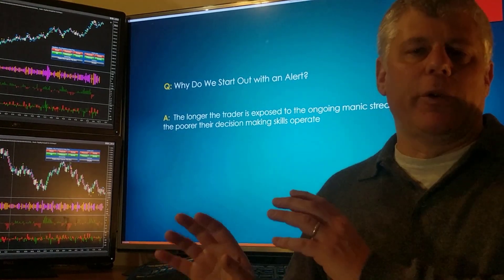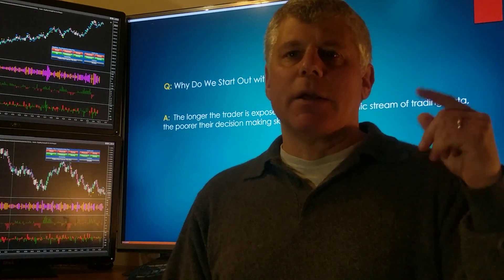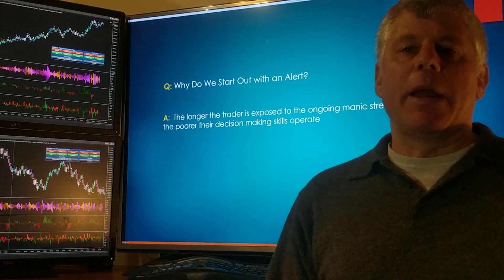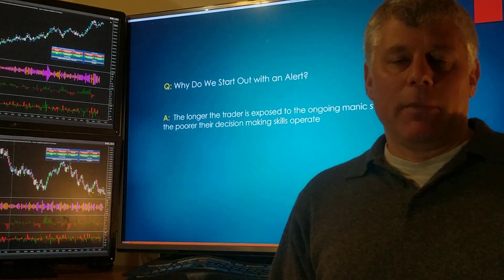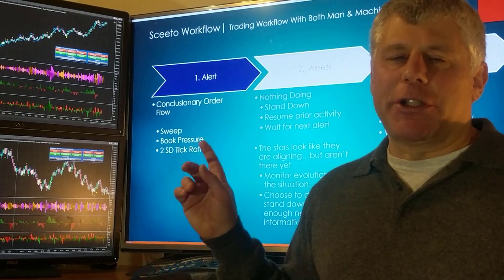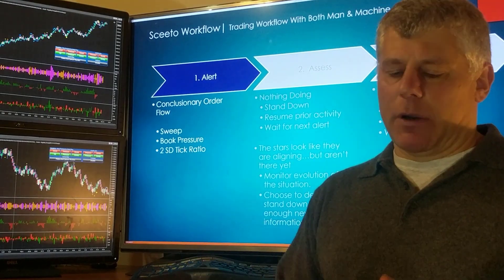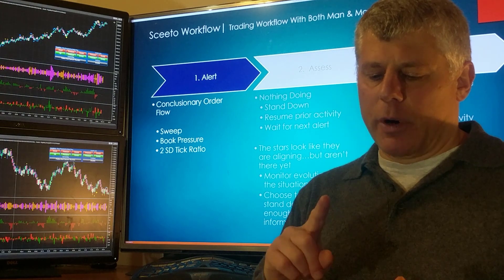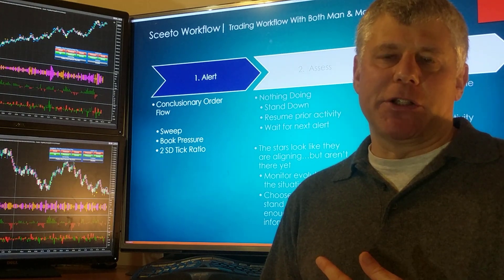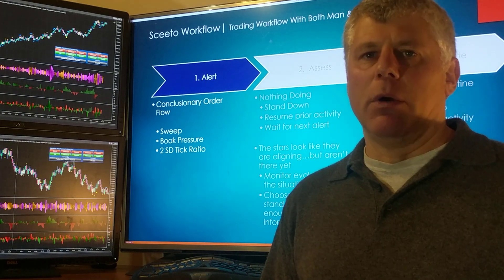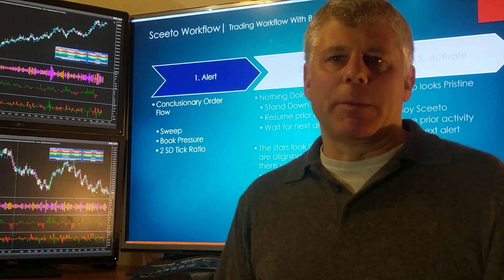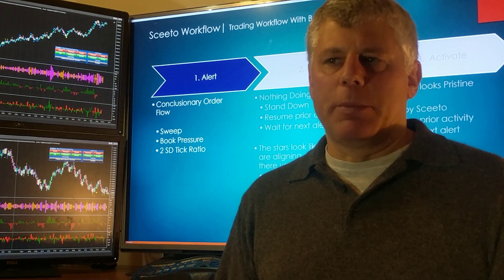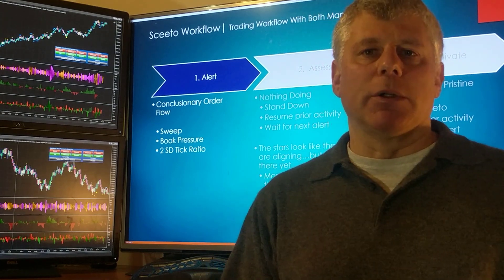We use these order flow alerts to look out into the market for us — to say, hey, something happened in the order book, you may want to go look at the market. The order flow alerts that ship with ninja bots are for book pressure, for sweep, and for our trusty two standard deviation tick ratio. When you hear those, that means something material happened in the order book and you're going to want to go look at your chart.